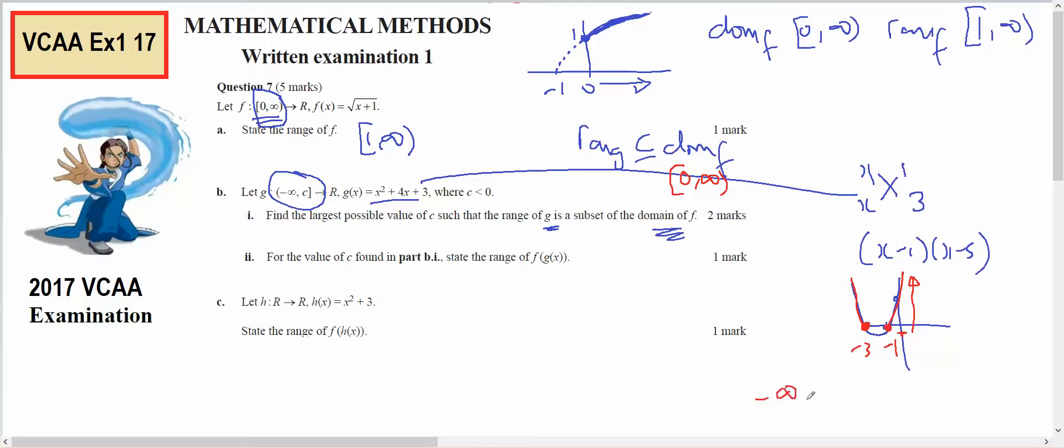I either need to do negative infinity to negative 3, or negative 1 to infinity, and that will give me a range that will fit inside this domain. Since I've got negative infinity to c, c must equal negative 3.